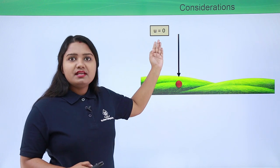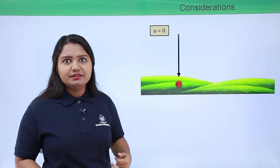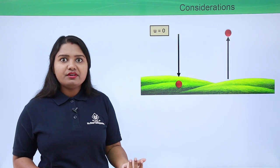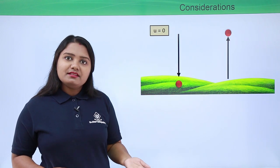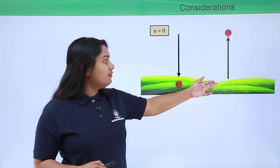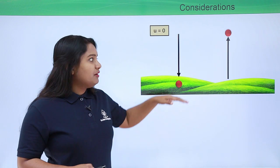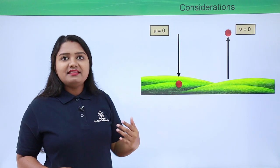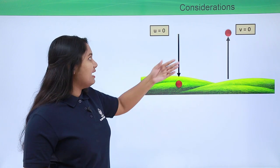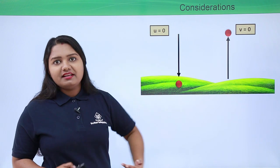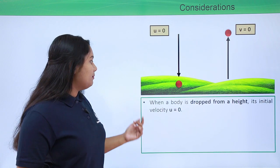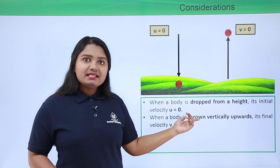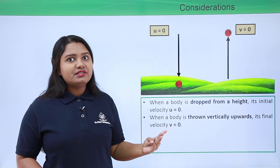When a body is thrown vertically upwards, a force is applied giving it an initial velocity, which is not zero. However, the velocity reduces as it rises, and the final velocity becomes zero at the maximum height it reaches. So when a body is thrown vertically upwards, its final velocity v is zero at the highest point.